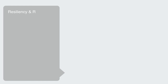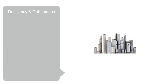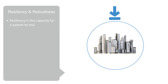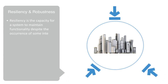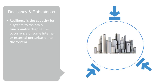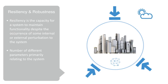So what we're really interested in is the continued functioning of these infrastructure systems — this is what we call their resilience. Resilience is the capacity for a system to maintain functionality despite the occurrence of some internal or external perturbation. This is very similar to robustness, meaning the ability to withstand or overcome adverse conditions. We can understand robustness along a number of different parameters, primarily relating to the system's dependency upon its external environment, and the internal structure and makeup of the system.